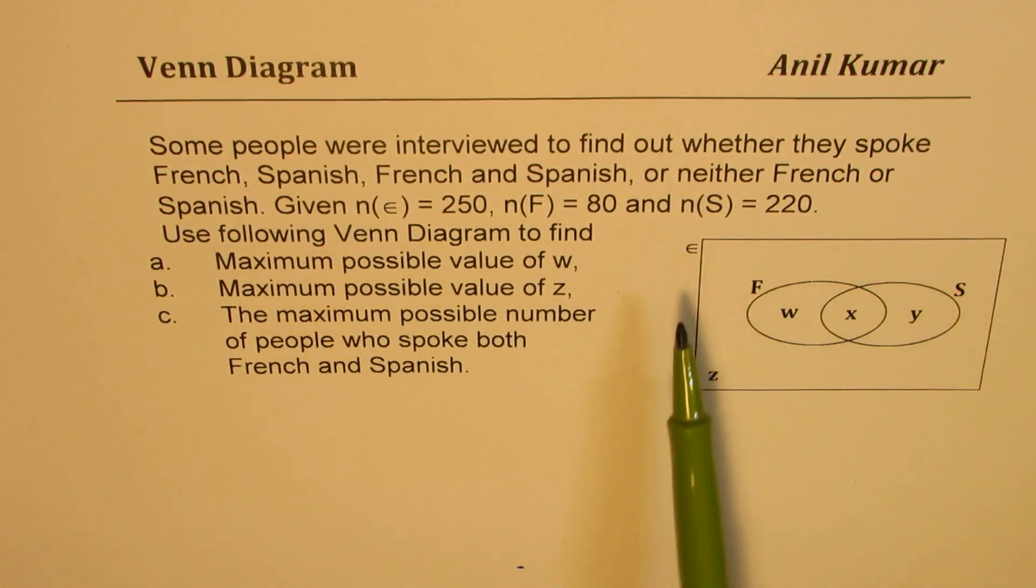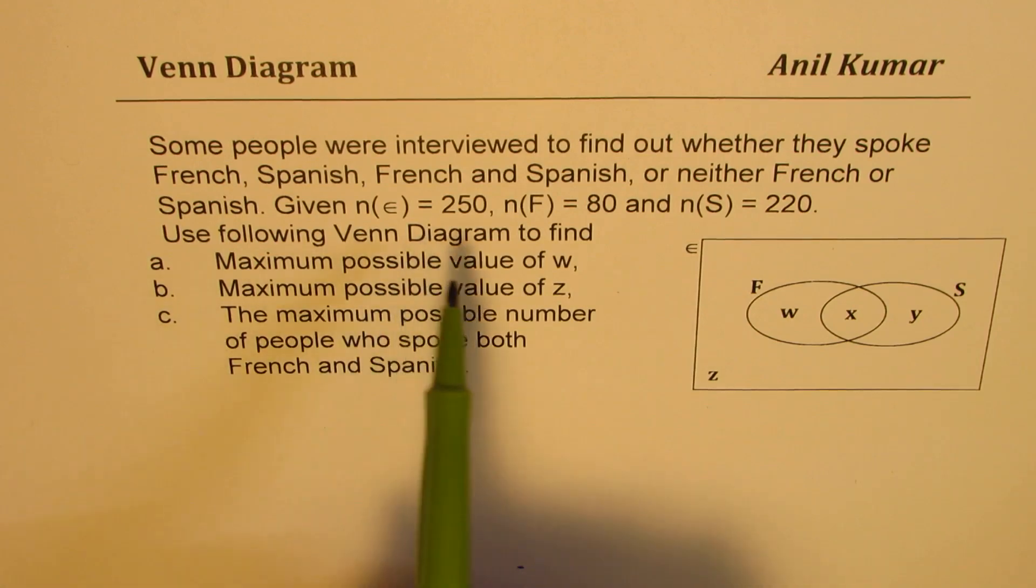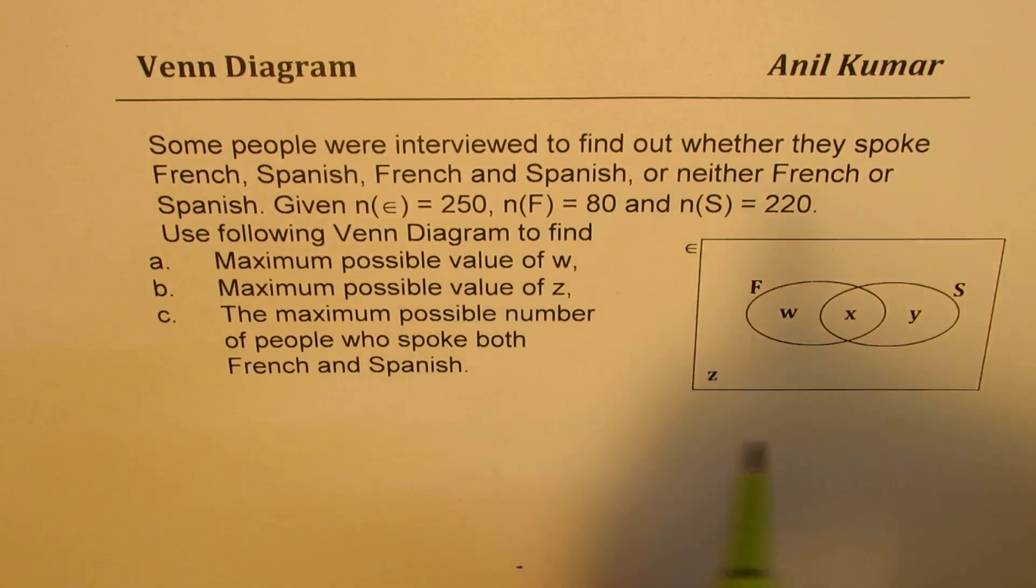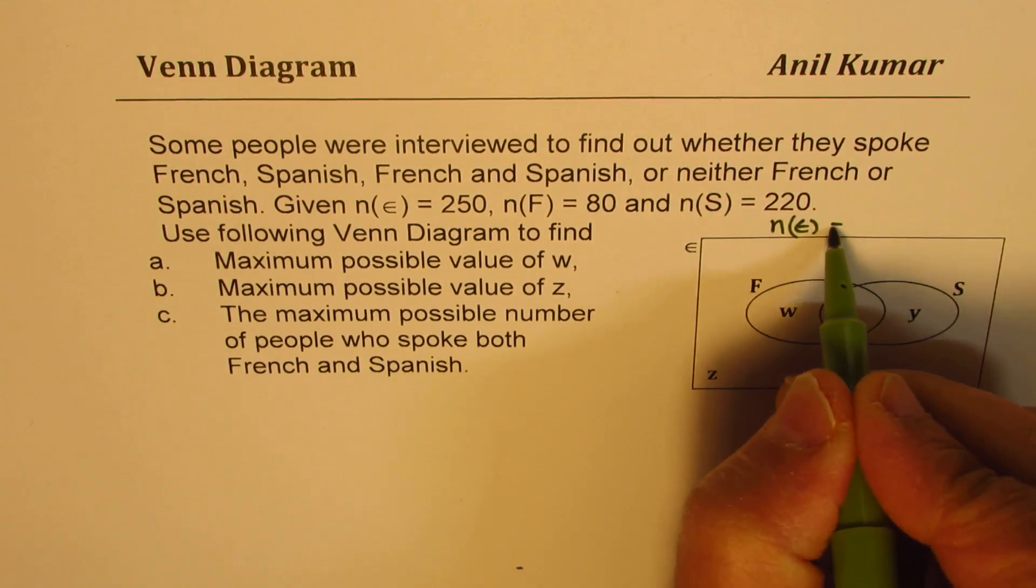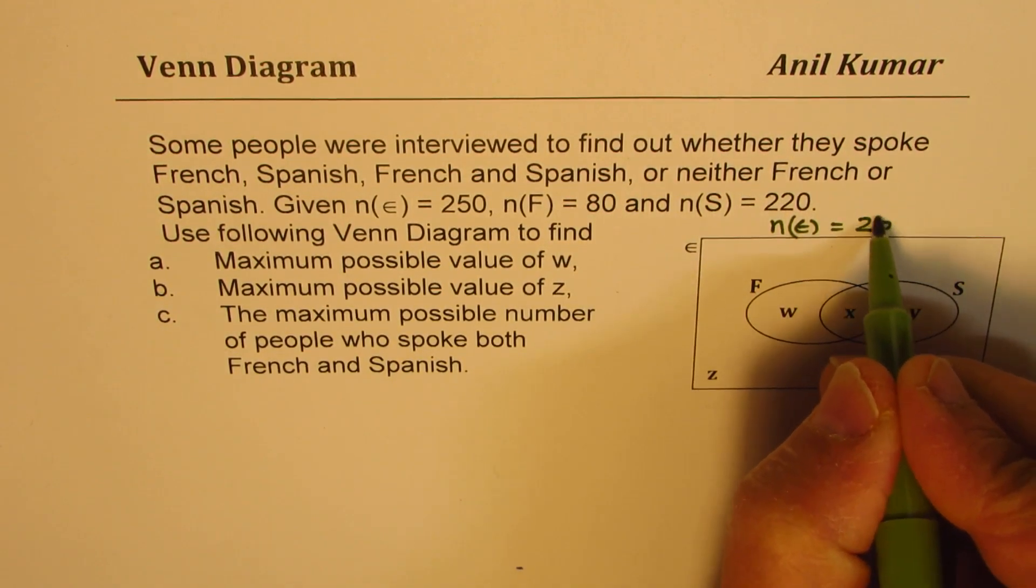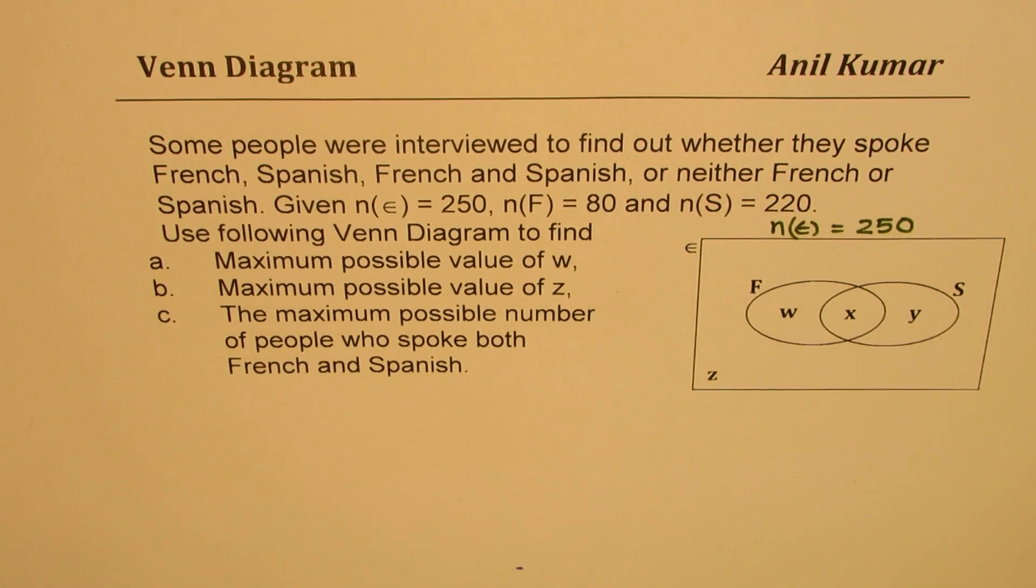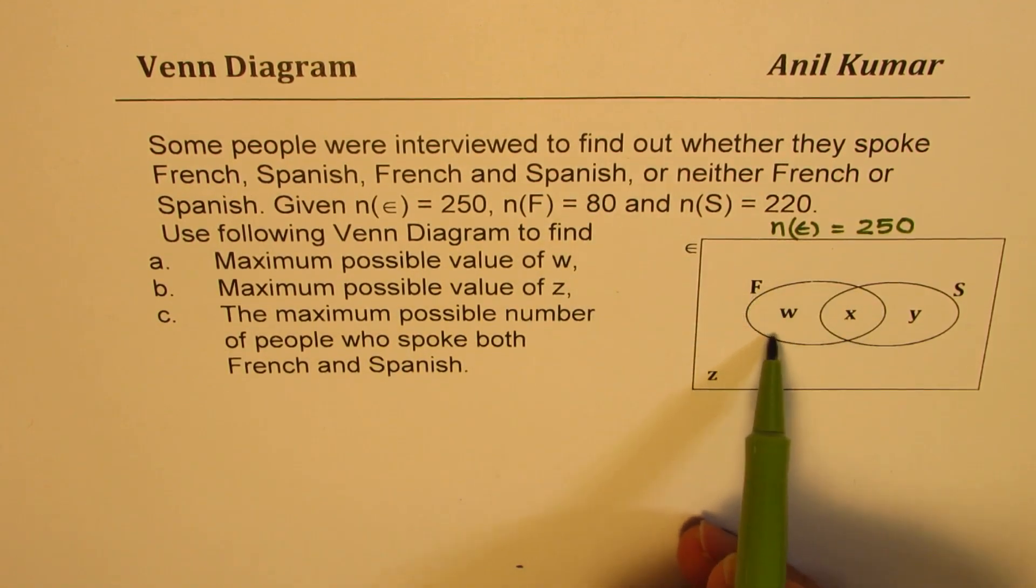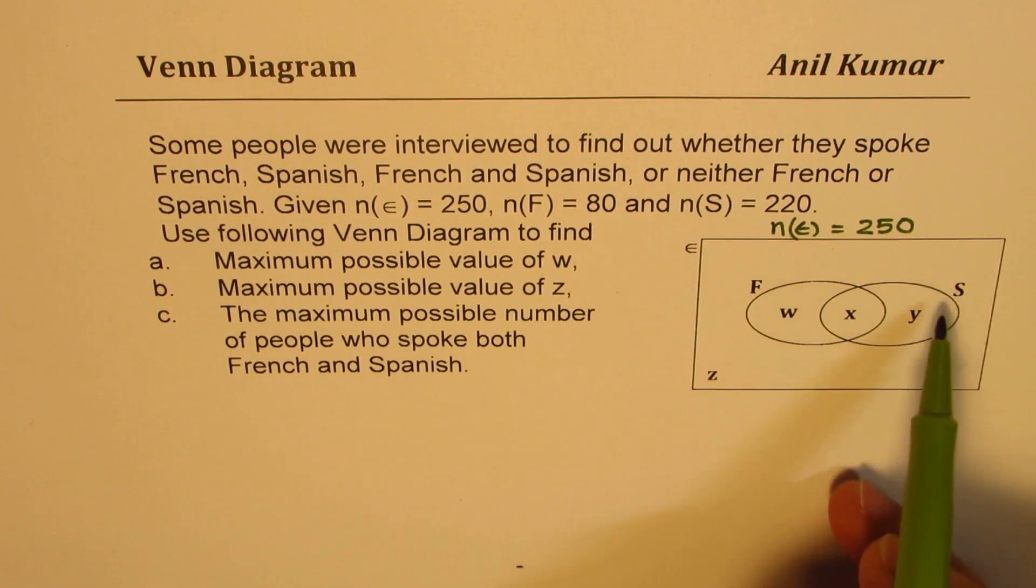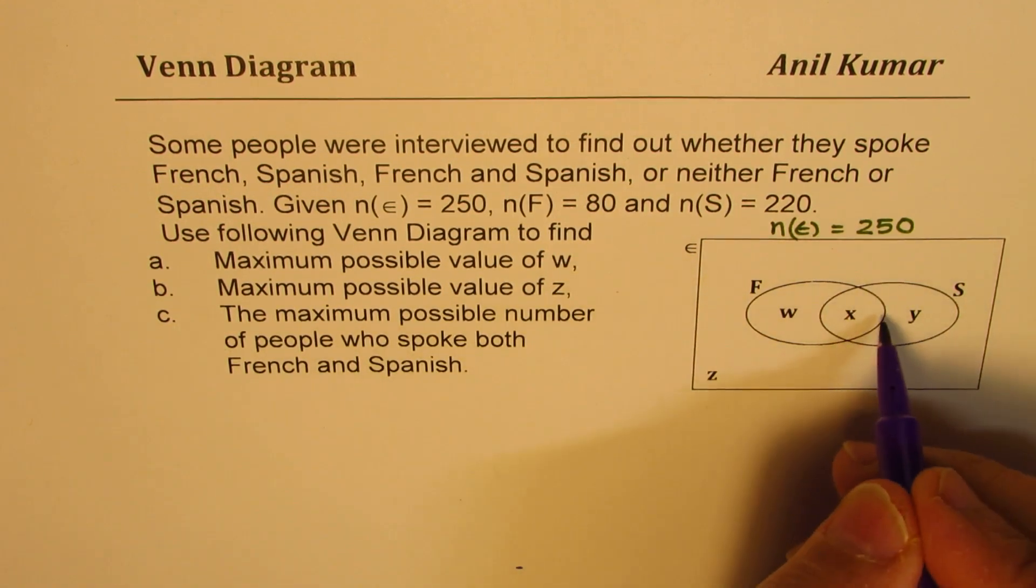Let's get back to this question. We are given that in a sample space, total number of people is 250. So N Epsilon, the superset here, is 250. N(F), French speaking, is 80. So this whole group F is 80. Spanish speaking is 220. This whole group is 220. Let me make a color code here.